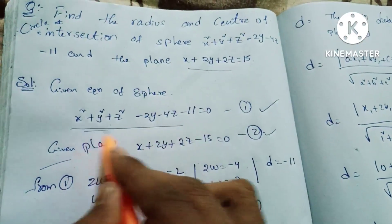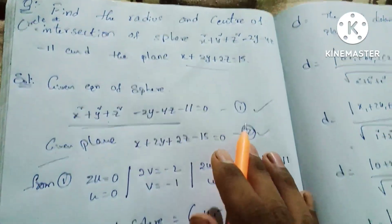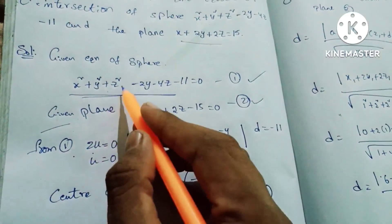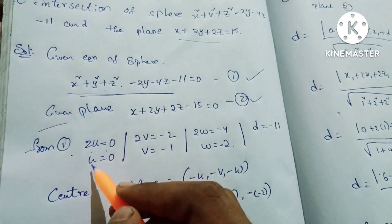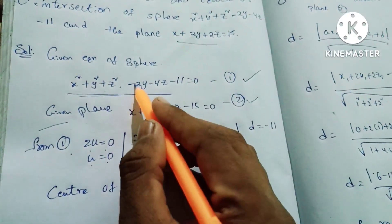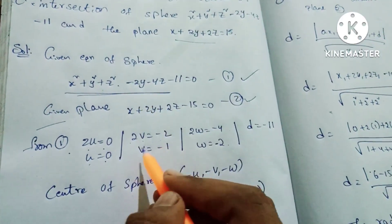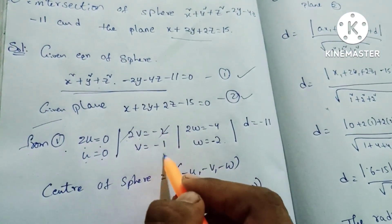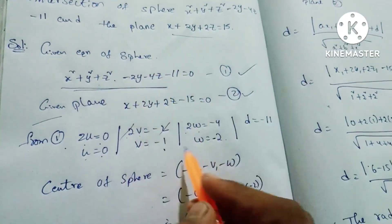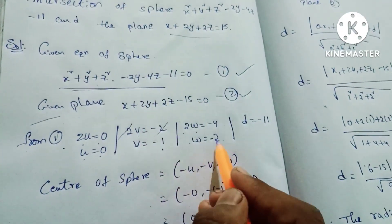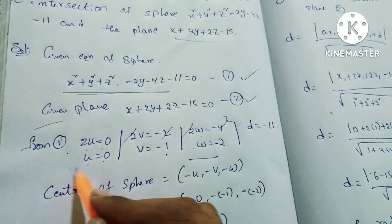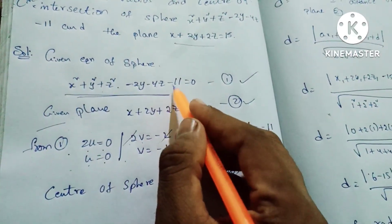If we compare the sphere with the general equation: 2u equals the x-term coefficient, so 2u = 0, giving u = 0. Then 2v equals the y-term coefficient, which is -2, so v = -1. And 2w equals -4, so w = -2. Therefore u, v, w values are identified from the sphere equation.